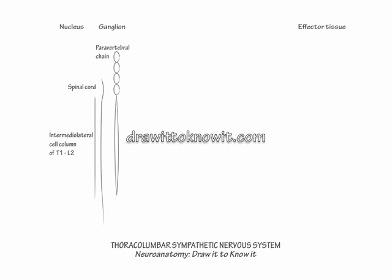Next, draw the perivertebral chain. It resembles a string of pearls and lies just lateral to the vertebral column. We draw it as four circles and a long tail because of the 24 sympathetic ganglia, only four are clinically worth specifying.